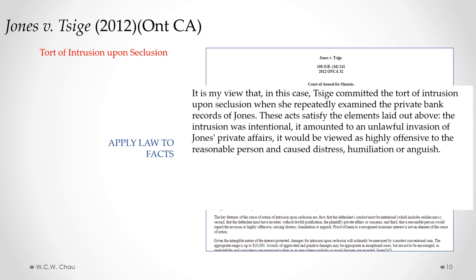The court applied that legal test to the facts and came to the obvious conclusion that Winnie Tosig had committed the tort of intrusion upon seclusion. The three elements of the tort had been satisfied: what Winnie did was intentional, it amounted to an unlawful invasion of Jones's private affairs, and it is viewed as highly offensive to a reasonable person and caused distress, humiliation, or anguish.